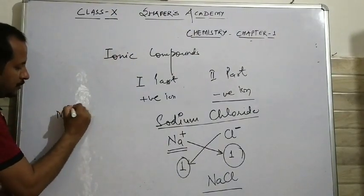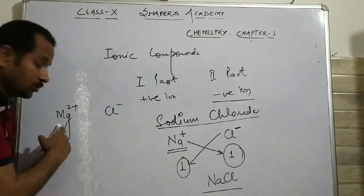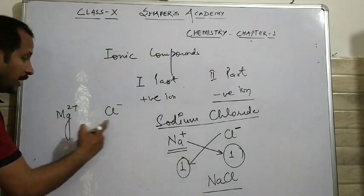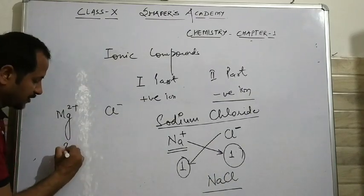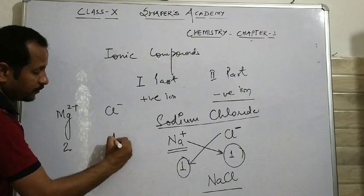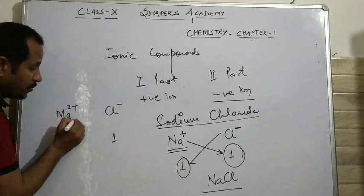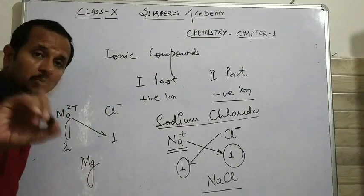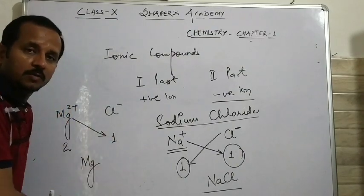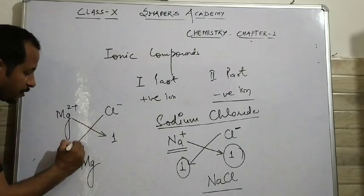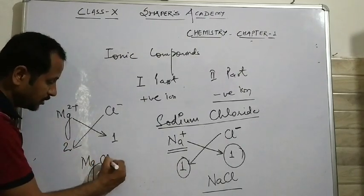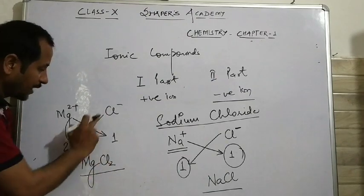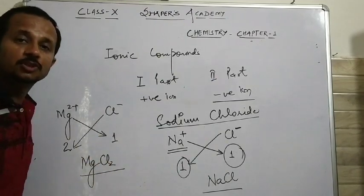Next example: magnesium chloride. Symbol of magnesium is Mg²⁺ and symbol of chloride is Cl¹⁻. So what is the valency of magnesium? 2. And valency of chlorine is 1. Please do not write the charges in the chemical formula. The number of chlorine atoms is 2. So the formula is MgCl₂.